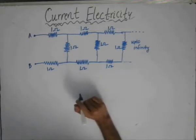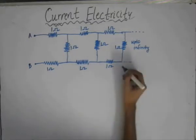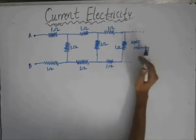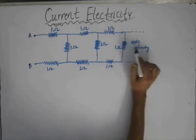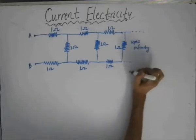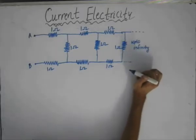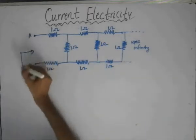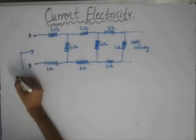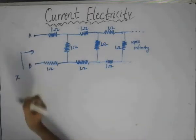In order to solve such types of problems, since the number of circuit elements — that is, resistors in this case — is going up to infinity, what we can do is suppose we assume that the equivalent resistance between these two points is equal to x ohm.